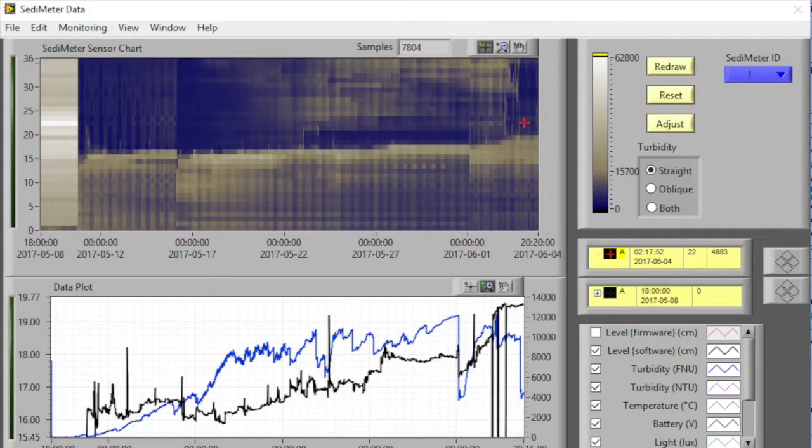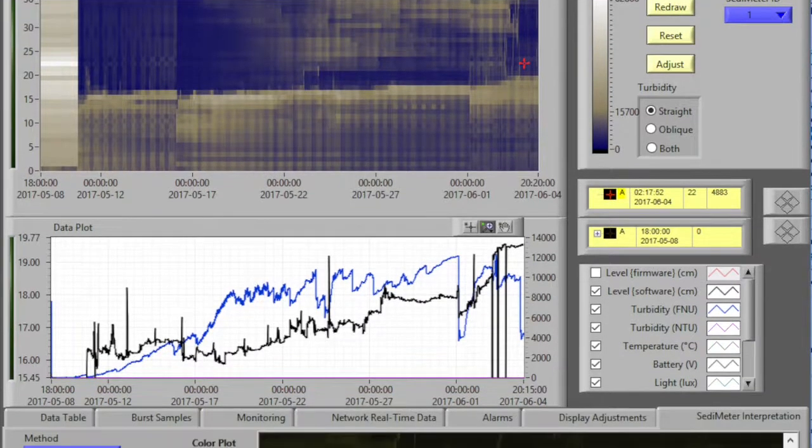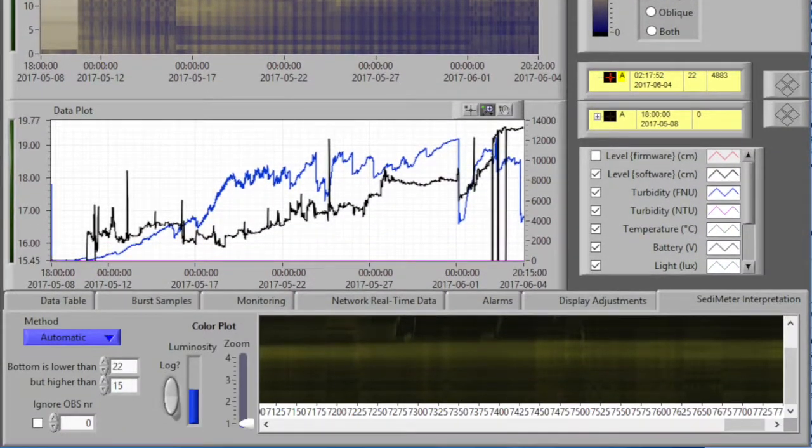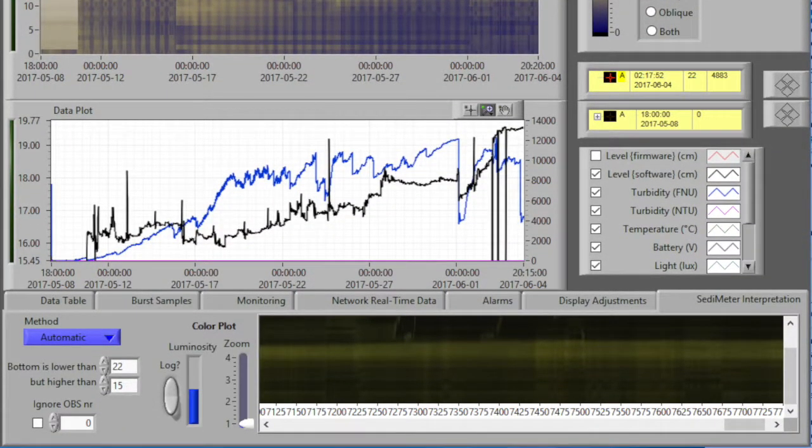Here is one month of data from one of those three sedimeters. And as you can see, it's perfectly possible to determine the level of the bottom, which is the black line in the data plot chart. Here in the bottom, you can also see the color plot that is created now, where we have both straight and oblique measurement of backscatter.